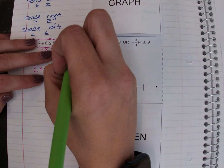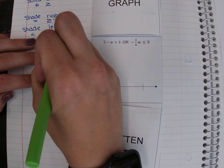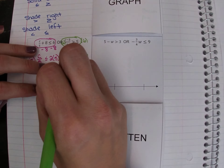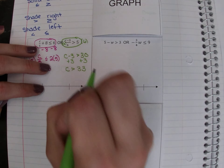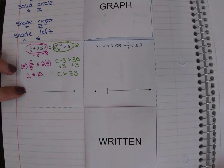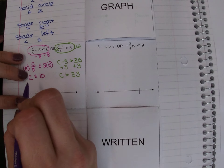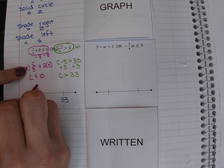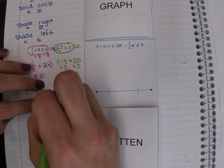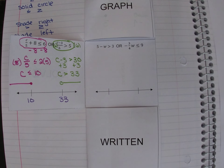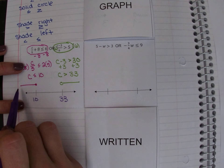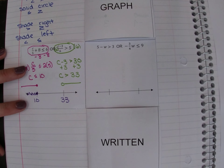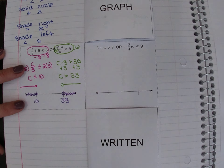Then forget the first one and look at the second. This is all part of the fraction, so on this one I need to multiply by 6 first, giving c minus 3 is greater than 30. Then undo subtracting 3 by adding 3. When placing these on the number line, the smaller number goes on the left. Solid circle at 10, shaded to the left. Open circle at 33, shaded to the right. Bringing anything down where we see at least one: to the left of 10 — yes; in the middle — no; to the right — yes.